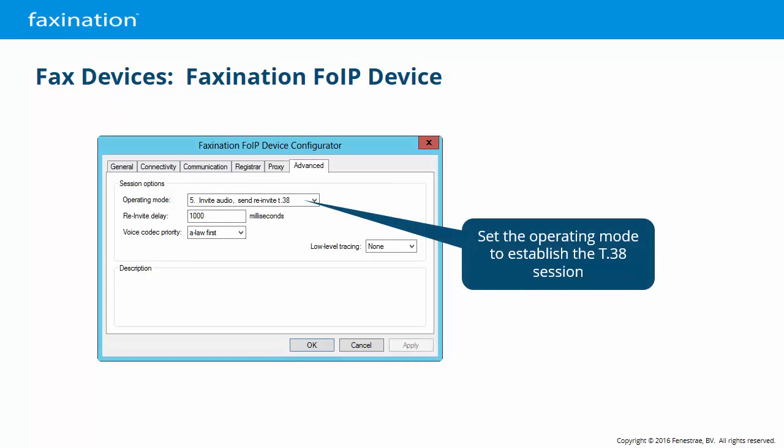On the Advanced tab, you can configure some SIP T.38 interoperability options. First we set the operating mode. The options are: 1) Invite T.38, wait re-invite; 2) Invite audio plus T.38, send re-invite with no audio plus T.38; 3) Invite audio, wait re-invite; 4) Invite audio, send re-invite no audio plus T.38; and 5) Invite audio, send re-invite T.38. The default is mode 5: we initially send an audio invite to establish the connection, then change the mode to T.38. This mode works well in most environments.